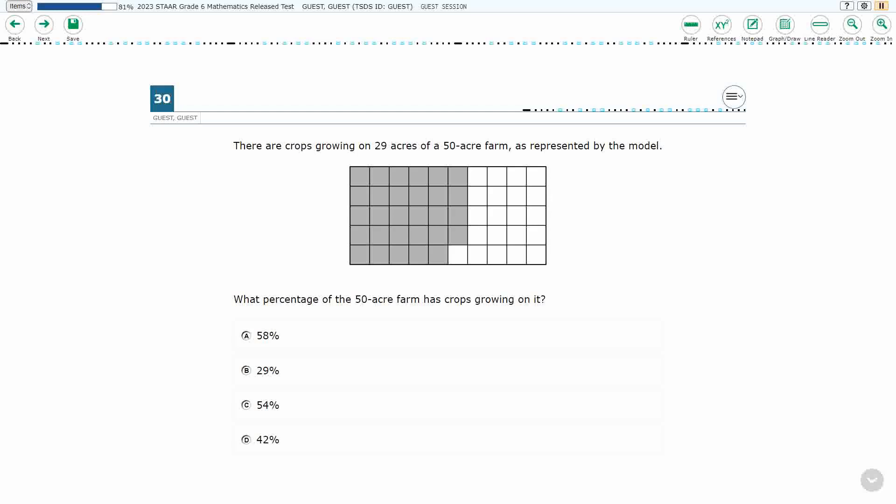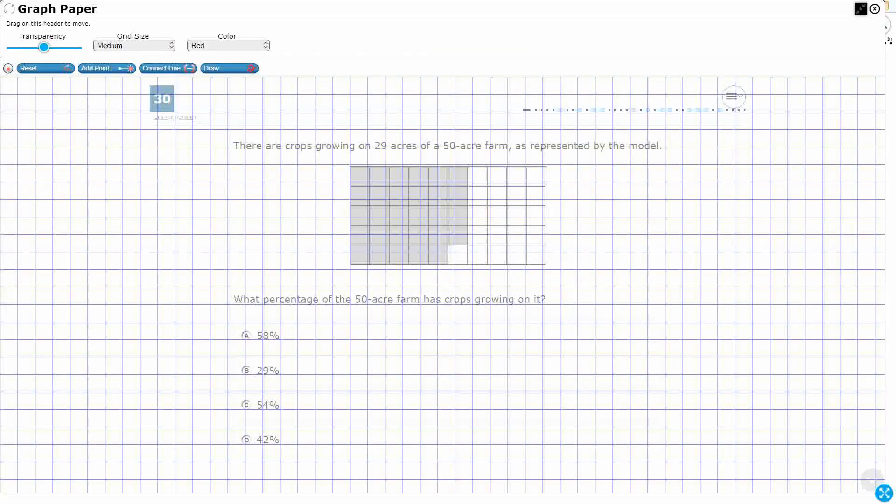So we've got crops growing on 29 of 50 acre farms, so we've got this model here. So we need to turn that into a percent. So there's quite a few different ways to solve this.